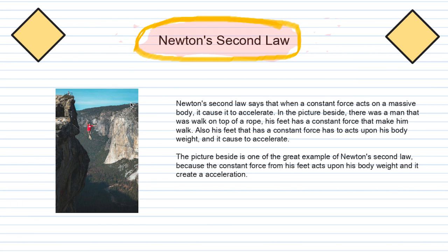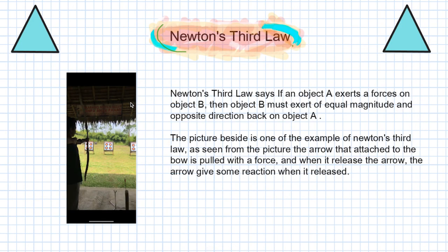Next is Newton's second law, which states that when a constant force acts upon a massive body, it causes it to accelerate. In the picture, there is a man walking on top of a rope. His feet exert a constant force that makes him walk, and that force acts upon his body weight, causing acceleration. This is a great example of Newton's second law because the constant force from his feet acts upon his body weight and creates acceleration.